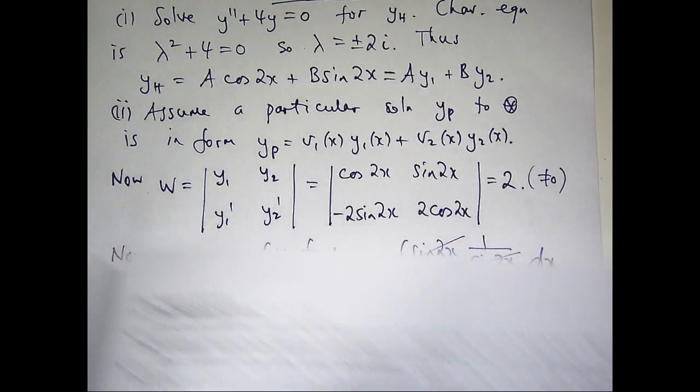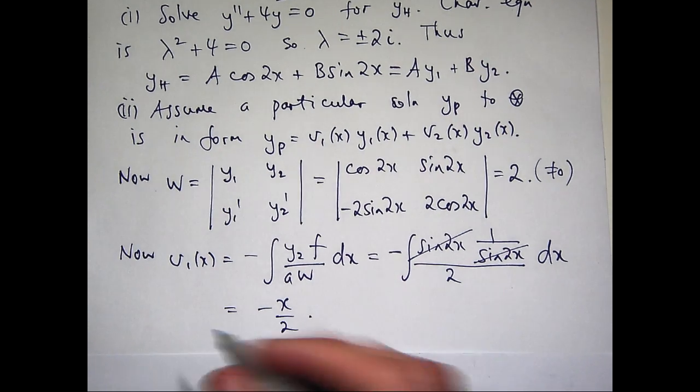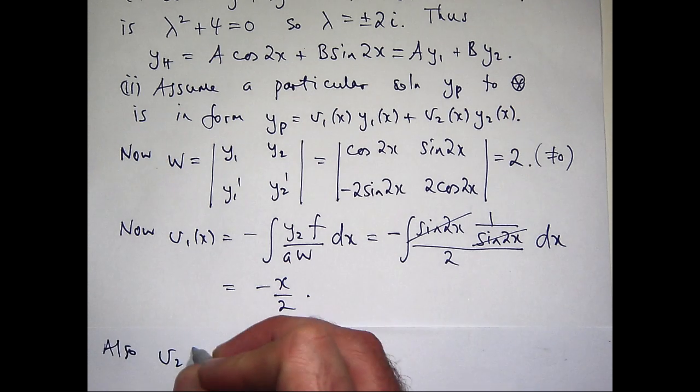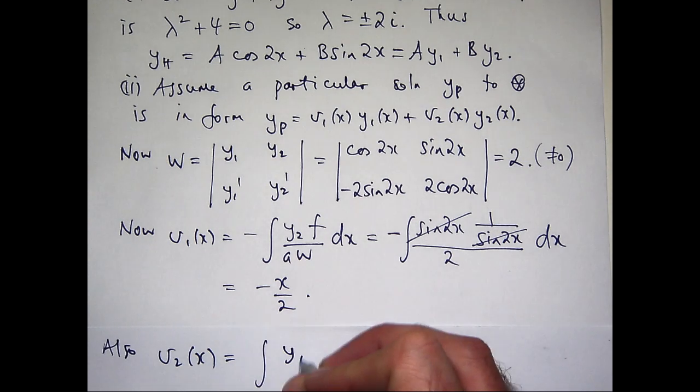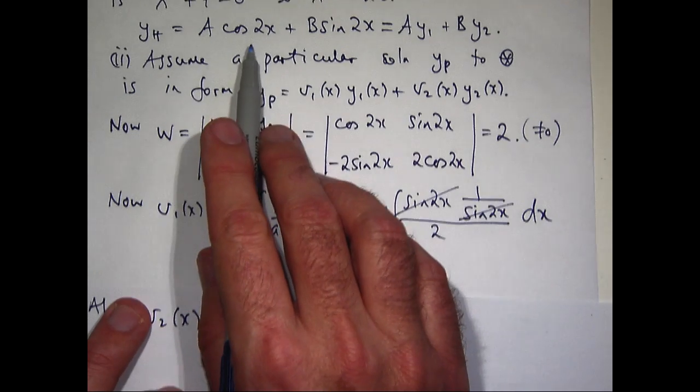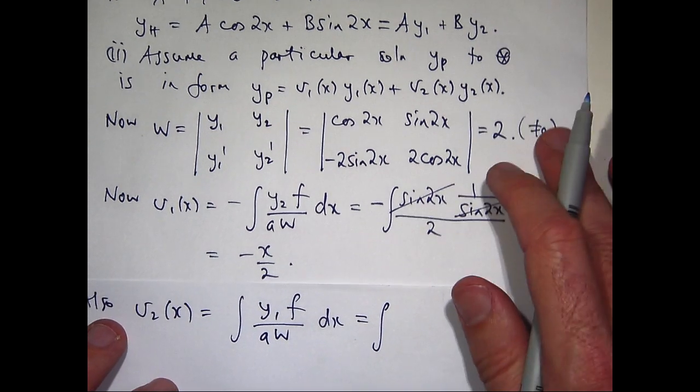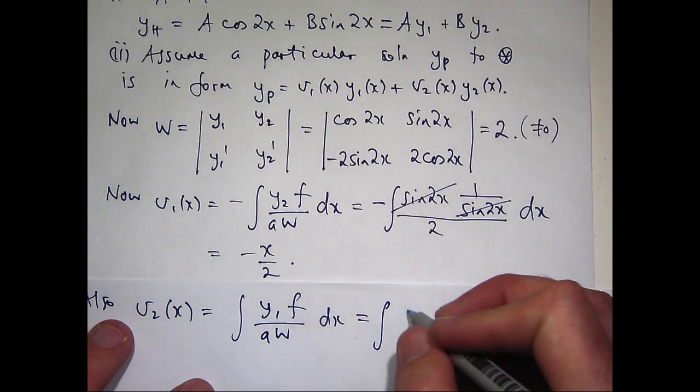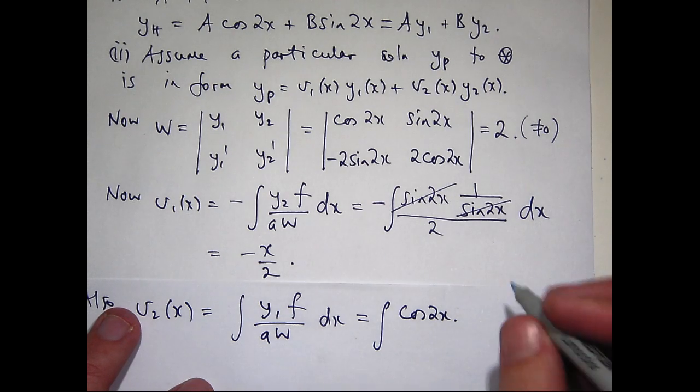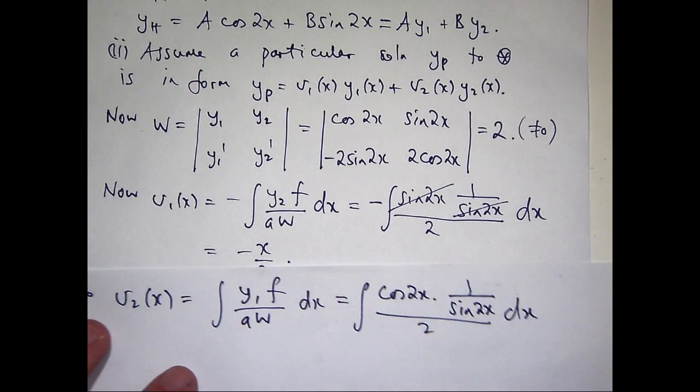So to compute v2, I'm going to use this integral here. v2 is just the following. So my y1 in this case is cos(2x), my f again is cosec(2x), my a is 1 and my W is 2. So let's sub those in and see how we go. And again, I'm going to write cosec as 1 over sin.